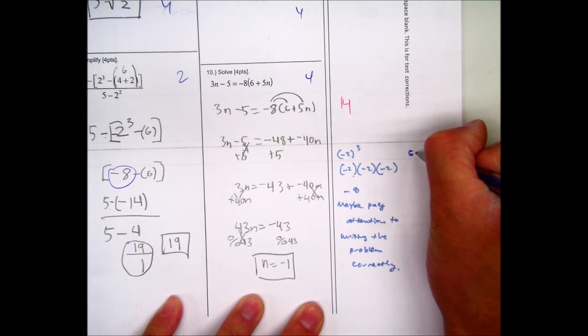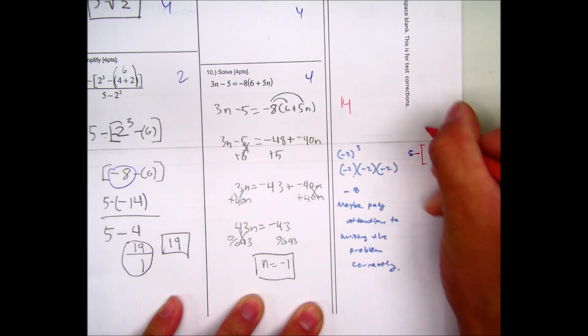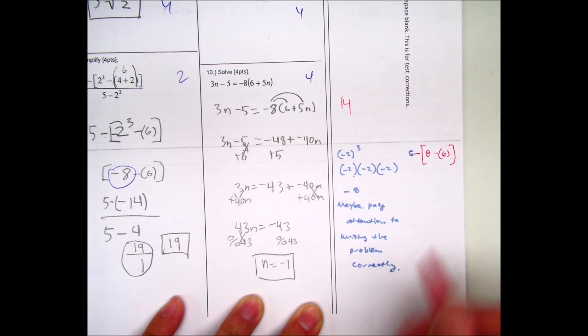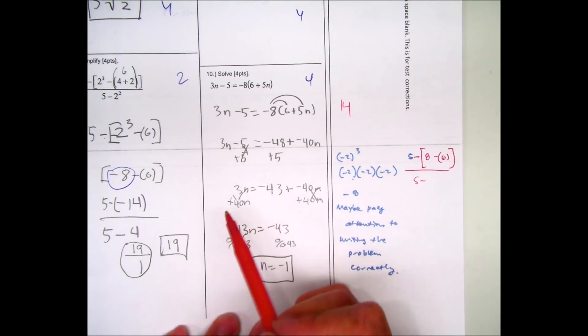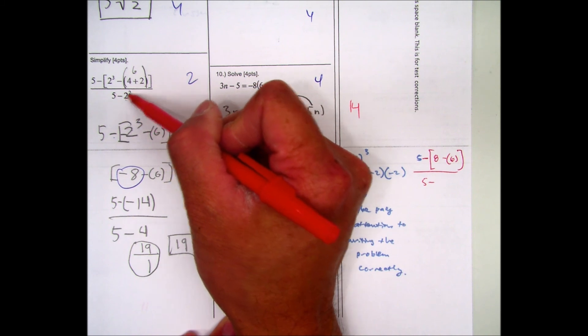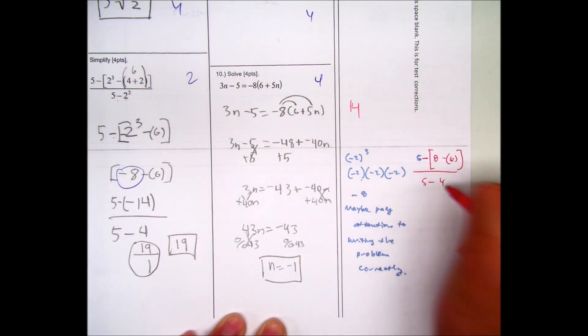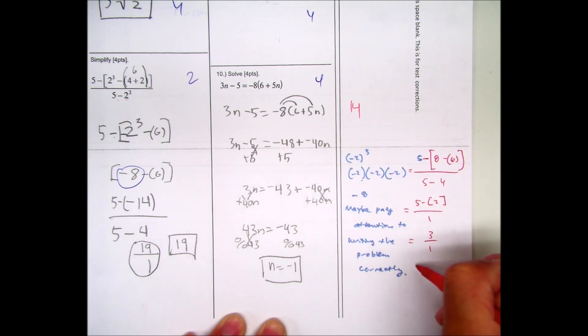So 5 minus the 2 to the third power is 8 minus 6. So I'm just watching the video from this. And then, 5 minus 2 squared. So that's not negative 2 squared. Because if it was, it would be in parentheses. So it's just 2 squared. Then you subtract it. So that's 4. And 5 minus 2 over 1. And 5 minus 2 is 3. Equal signs are equivalent. And that expression is equal to 3.